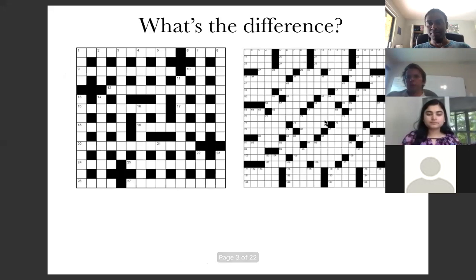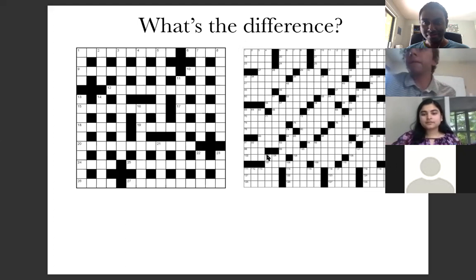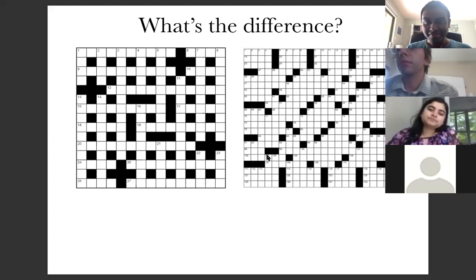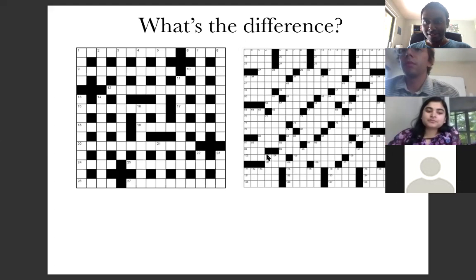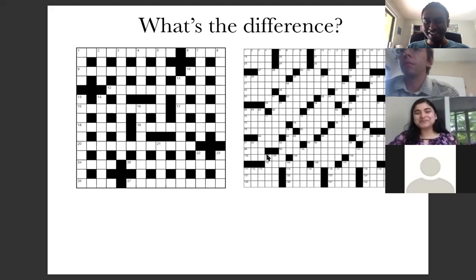Does anyone know the difference between these two kinds of crossword puzzle grids? Can anybody see any differences? [Student: Fun seems way more complicated.] Many more squares and relationships among the words — very good. More squares, wider squares. [Student: There's like a plus sign kind of structure.] That's actually a very interesting observation.